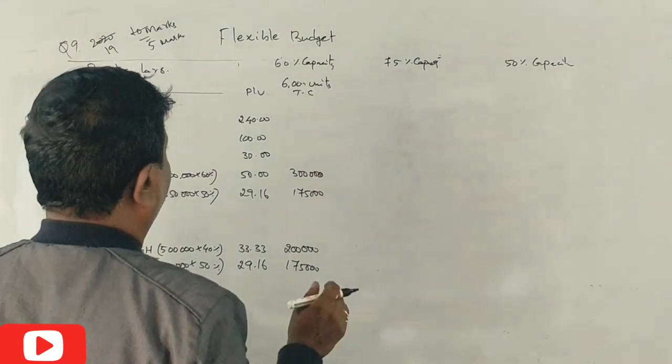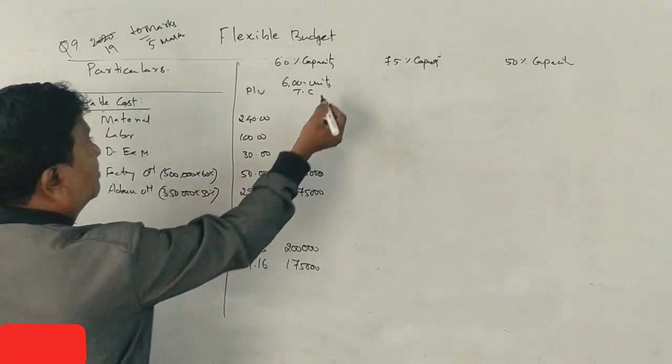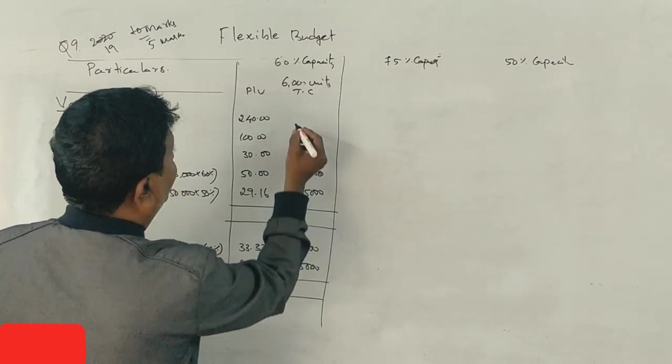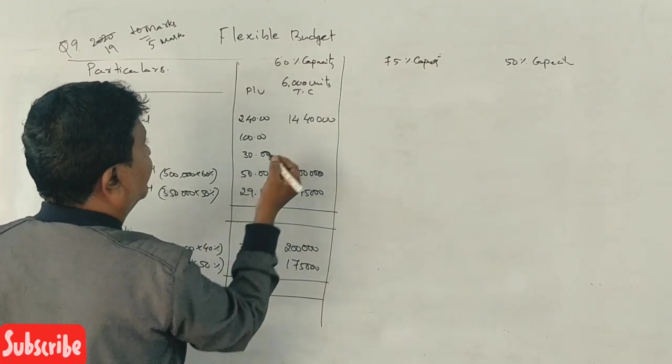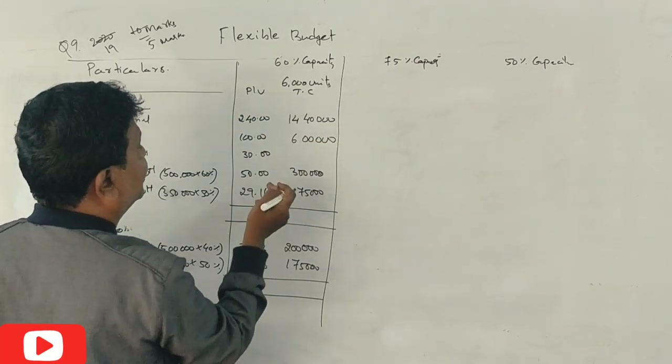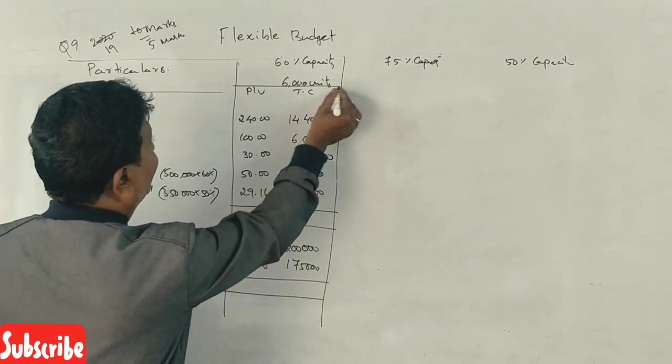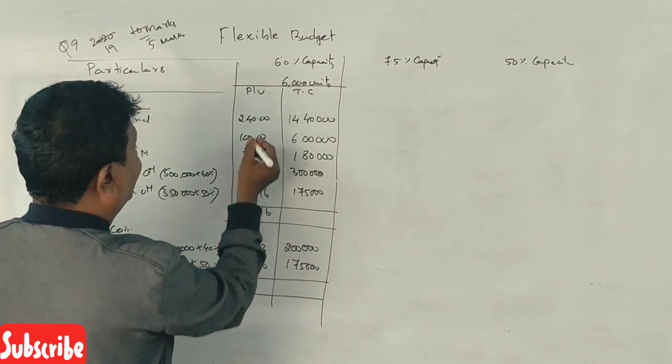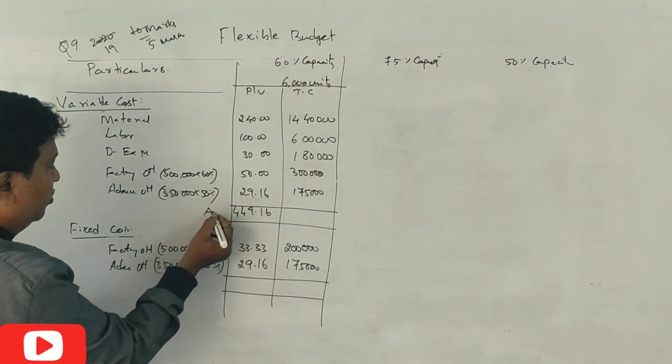Variable cost: Material is 240 into 6,000 units equals 14 lakhs 40,000. Labor 100 into 6,000 equals 6 lakhs. Direct expenses 30 into 6,000 equals 1 lakh 80,000. Factory overhead variable 50 into 6,000 equals 3 lakhs.